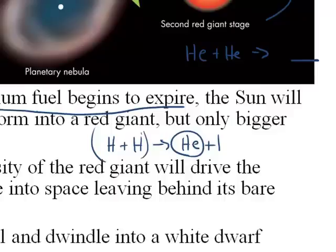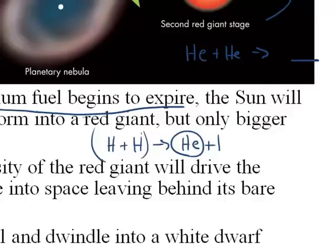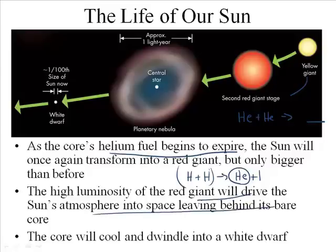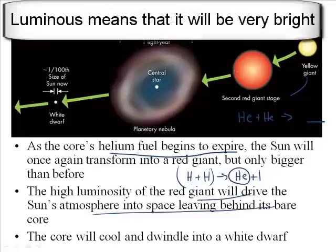Once you run out of helium, the sun will transform itself into another red giant, but a bigger one. It'll be a super big red giant. Then, it'll be very luminous. So the luminosity of the red giant will drive the sun's atmosphere into space, leaving behind its bare core.